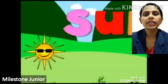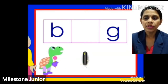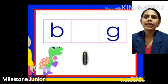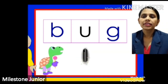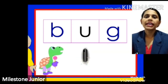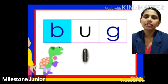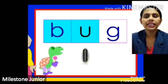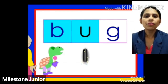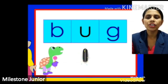Now the next word: fill in vowel U here, then start reading from B. After that vowel U and last G. So how will we read it? B, U, G — BUG. See the picture of BUG.